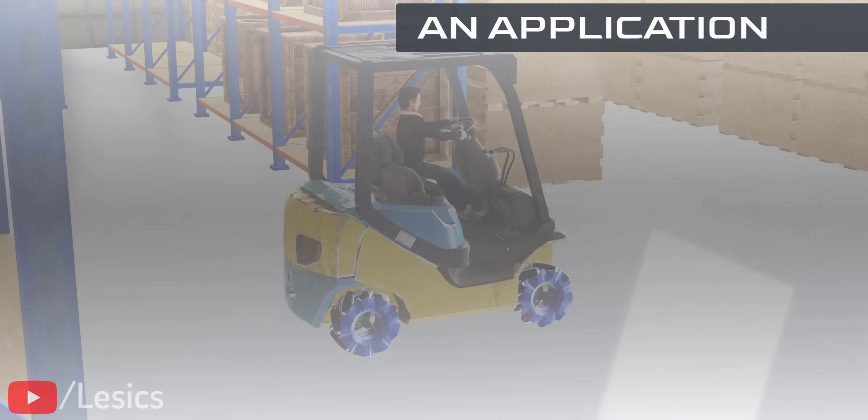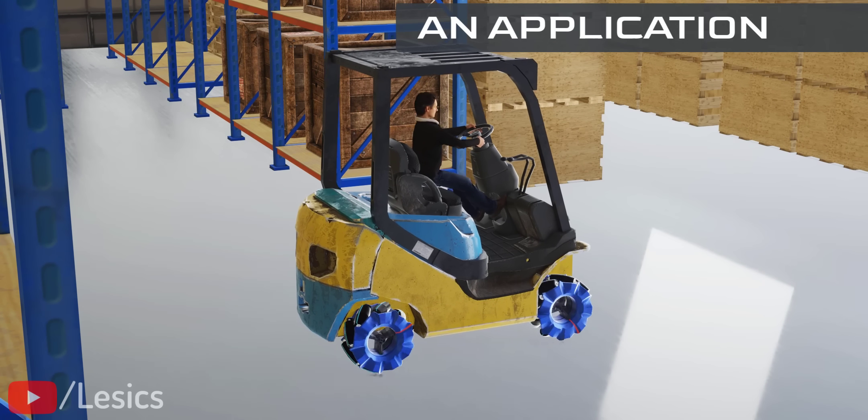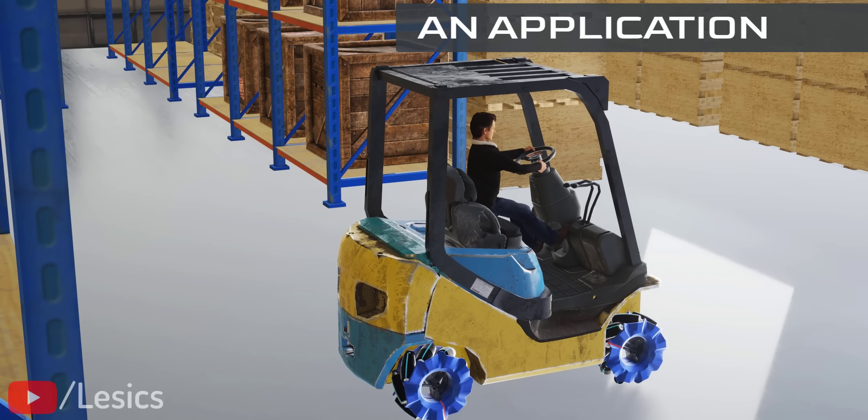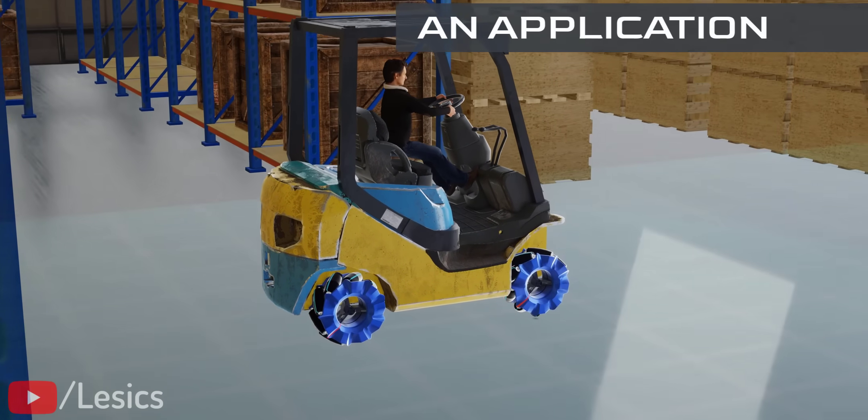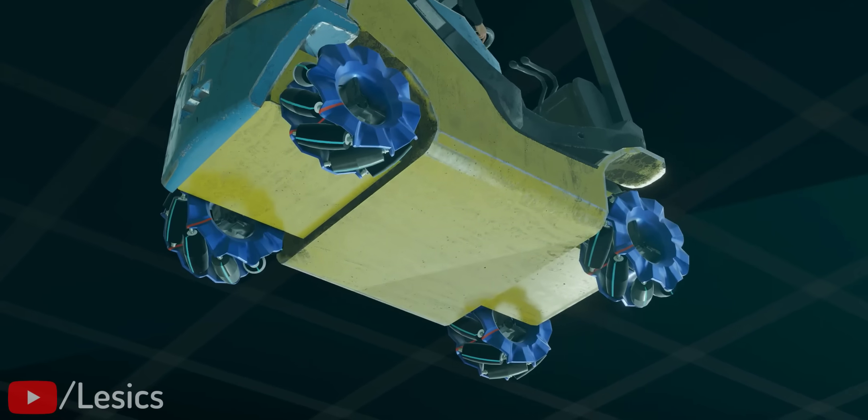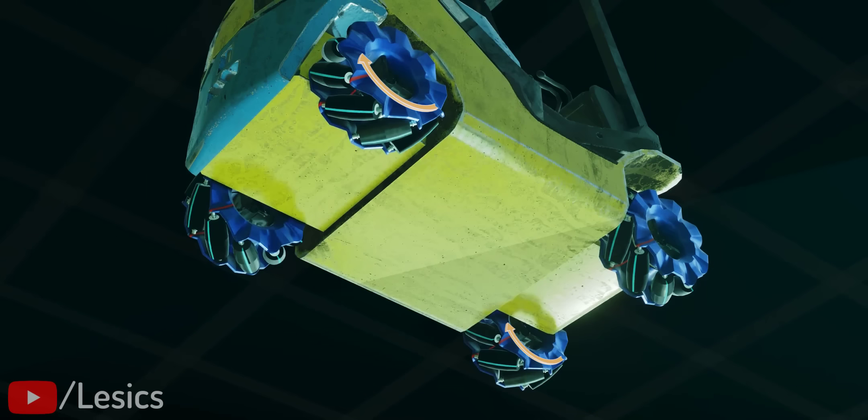Let's see how this forklift can achieve a perfect sideward movement. To achieve this motion, we must turn the diagonally opposite wheels in the same direction and the other wheel pair in the opposite direction. The frictional or driving force produced by all the wheels are marked here.